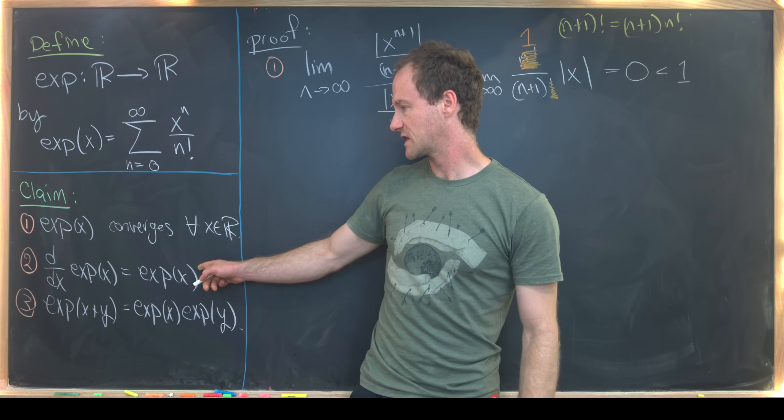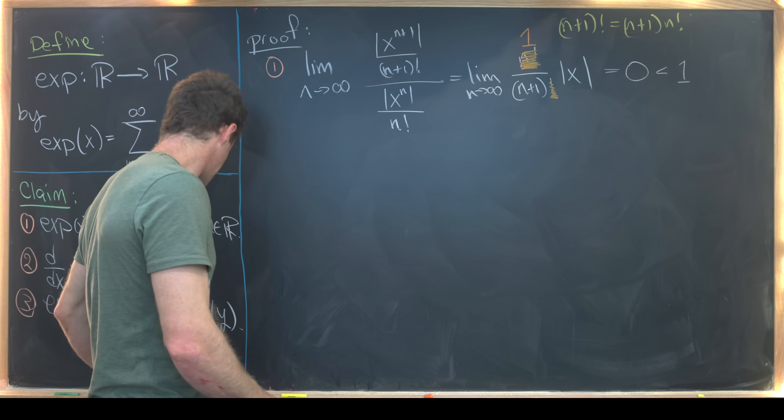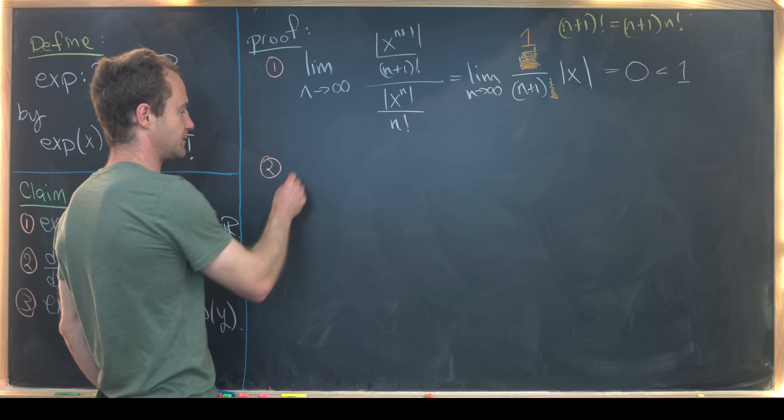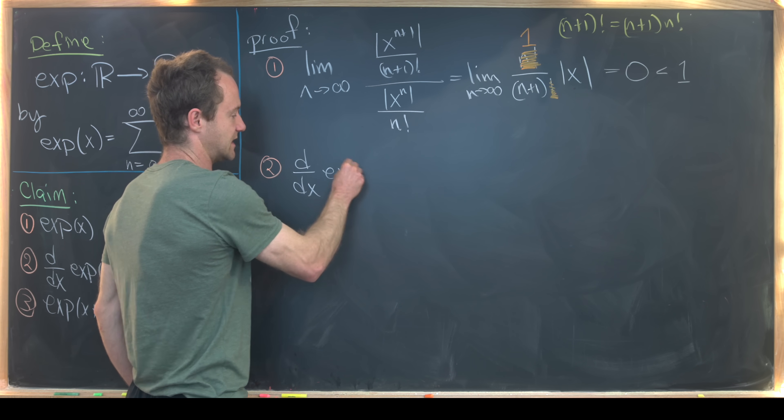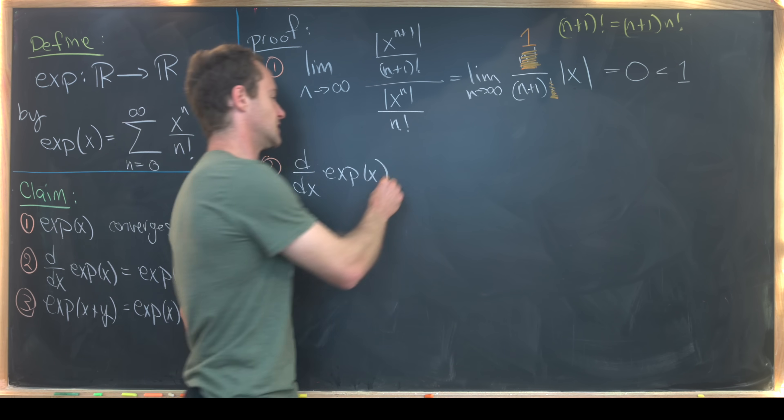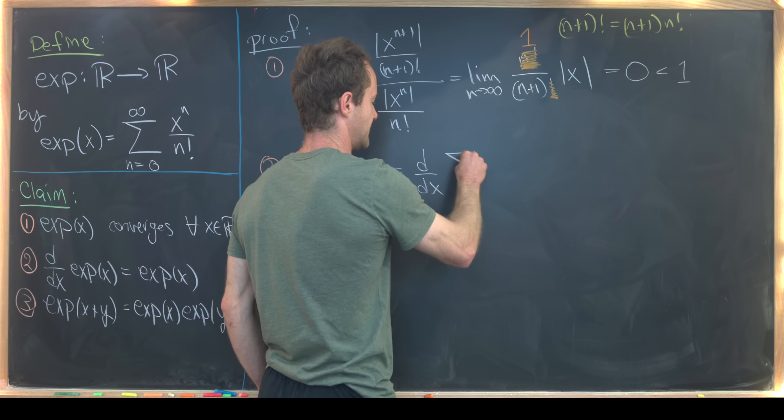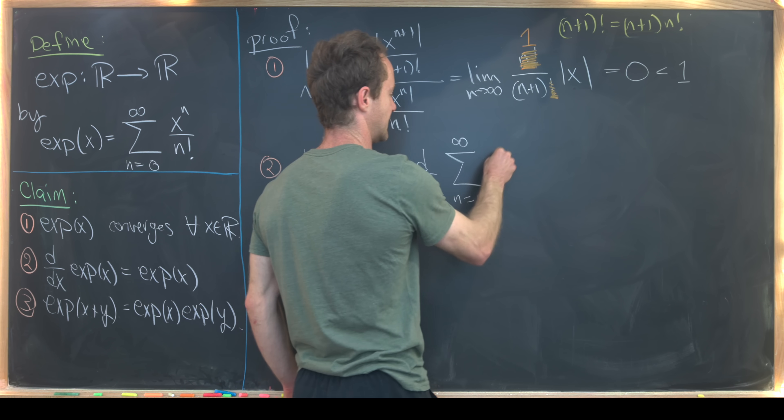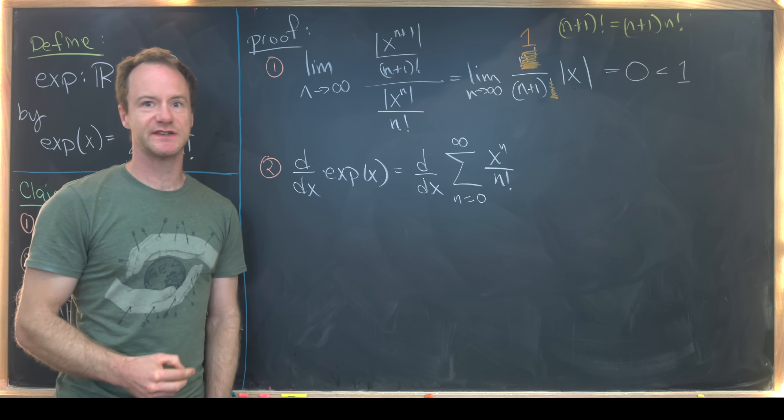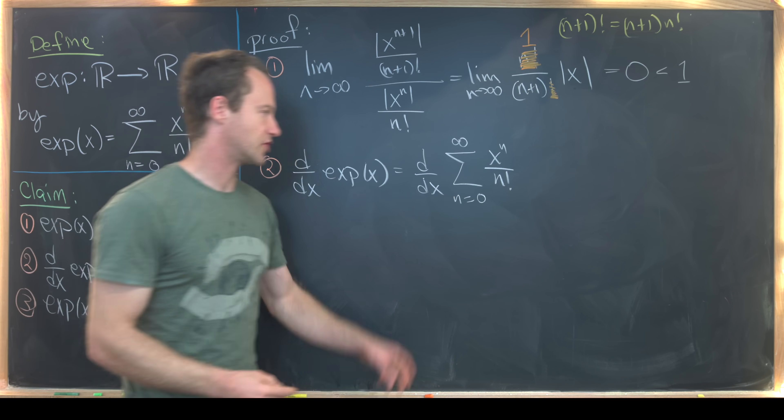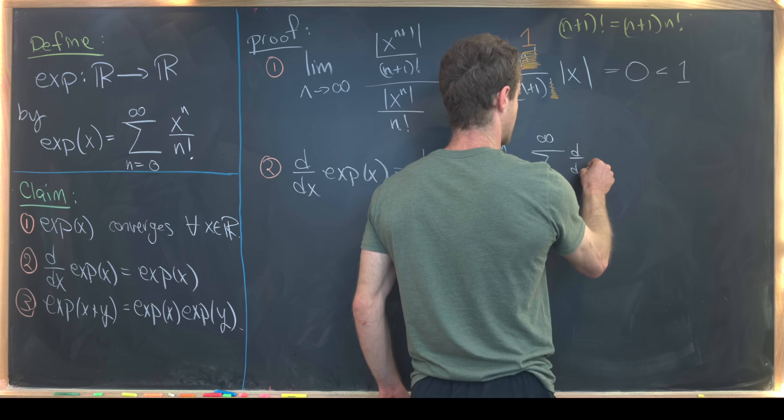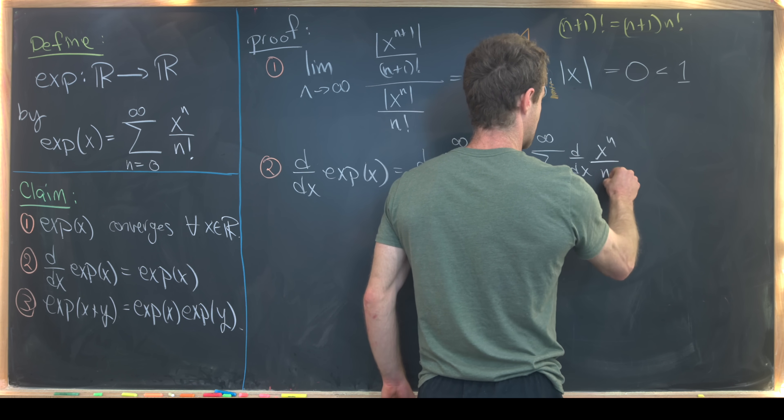So we did this. Our next goal is to look at this second claim, which says the derivative of our exp function is itself. So we'll calculate that directly from this definition we've given ourselves for exp(x). So this is going to be the derivative of this sum as n goes from 0 up to infinity of x to the n over n factorial. But we know this series absolutely converges. So that means we can bring our derivative inside. So we've got this sum as n goes from 0 to infinity of the derivative of x to the n over n factorial.